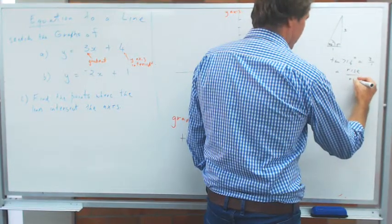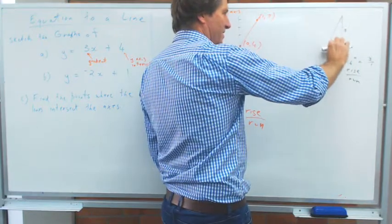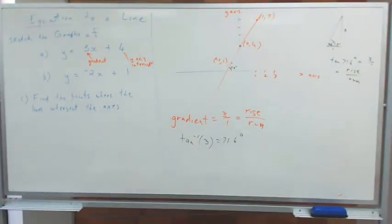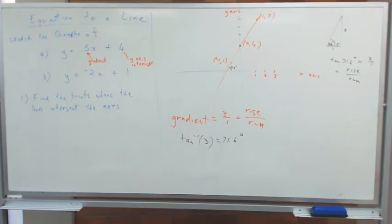So hang on. The opposite side is the rise, and the adjacent side is the run. So it is rise over run. So the tan function literally is giving you the gradient.